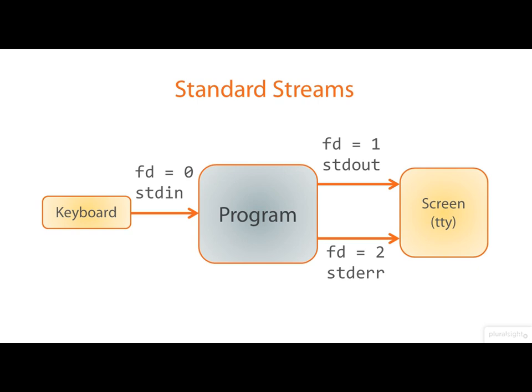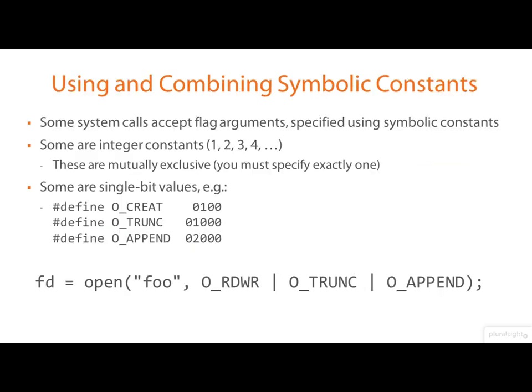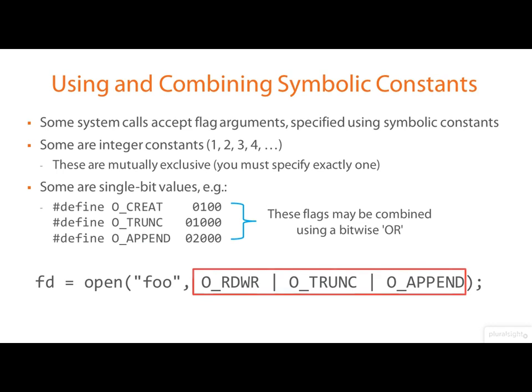These streams can be redirected by the shell before the program is run, but the program will not in general be aware of these redirections. We saw some symbolic constants used in the open call for the flags argument, and they can be used in the mode argument as well. In some cases these symbolic constants are intended to be bitwise OR'd together — they're defined to be single-bit values so that you can combine them. You see that happening here; the vertical bar operator here is the bitwise OR operator, not the pipe.